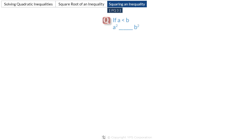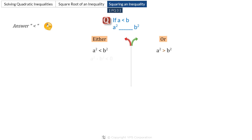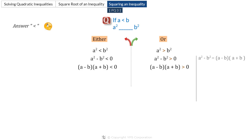You are given an inequality a less than b. Now fill in the blank: a squared blank b squared. You might say obviously less than — but don't be so quick. Squaring an inequality is a tricky thing. There are only two possible answers: either a squared is less than b squared or a squared is greater than b squared. Since a squared minus b squared equals (a minus b)(a plus b), and we know a is less than b, subtracting b from both sides gives a minus b less than 0 — so a minus b is negative.